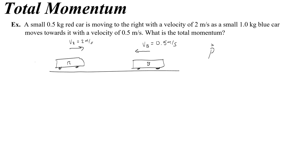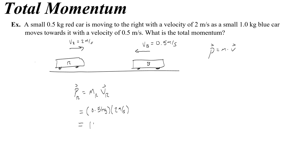Momentum is the product of mass and velocity. To find the momentum of the red car, you would do the mass of the red car times the velocity of the red car, which is 0.5 kilograms times 2 meters per second, giving you a total of 1 kilogram meter per second of momentum.